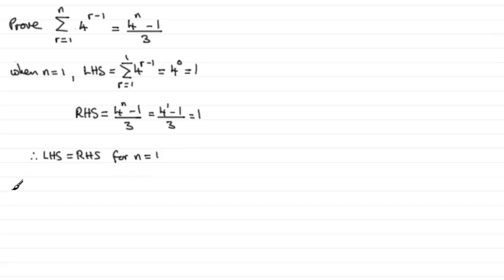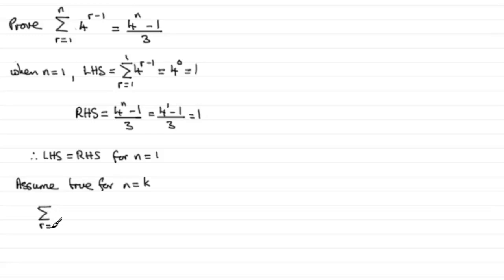Now we assume that it's true for some integer value of n — assume true for n equals k in general. In other words, that means that the sum of r going from 1 to k for 4 to the power r minus 1 is going to equal, substituting k for n, 4 to the power k minus 1, all divided by 3.